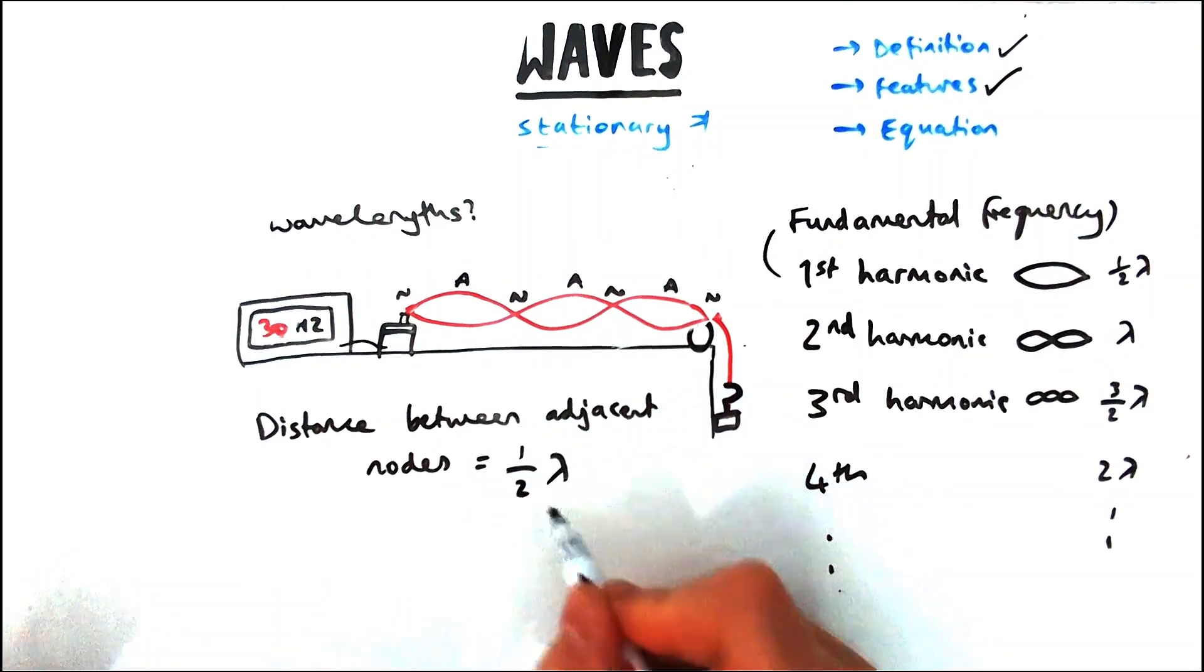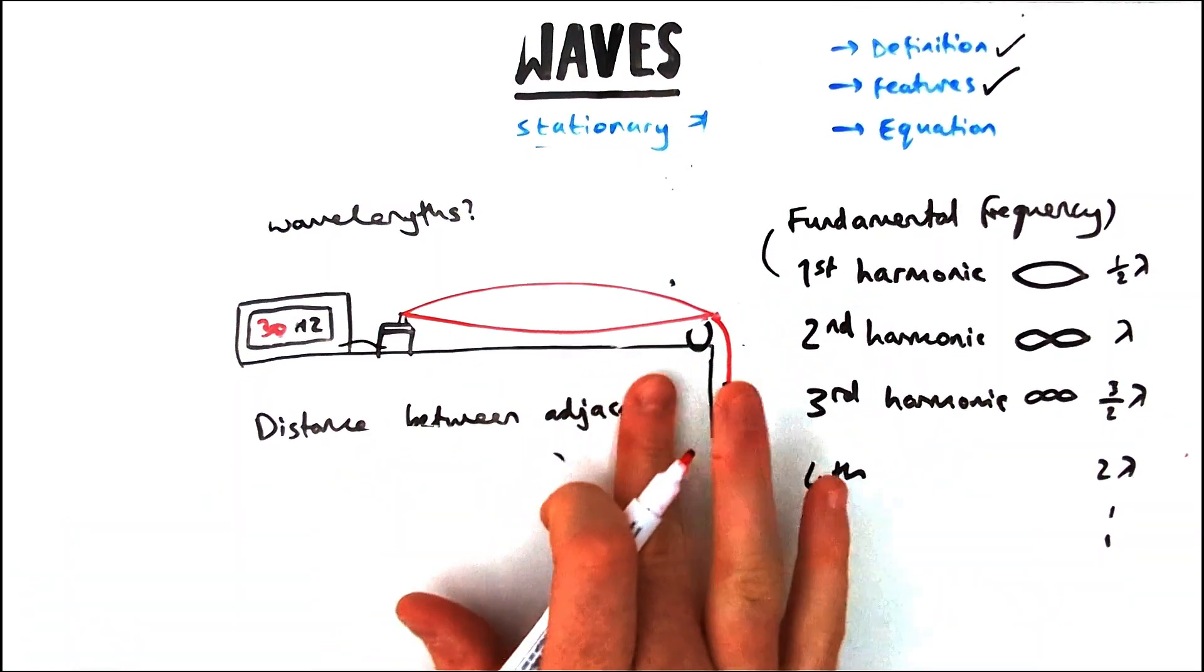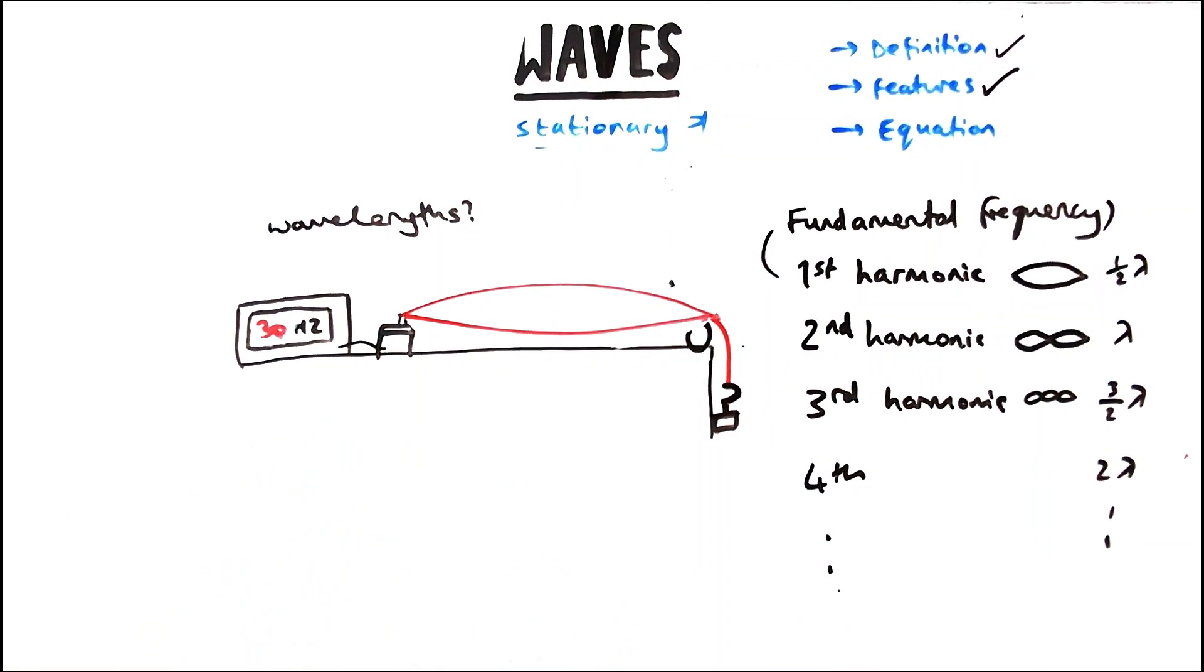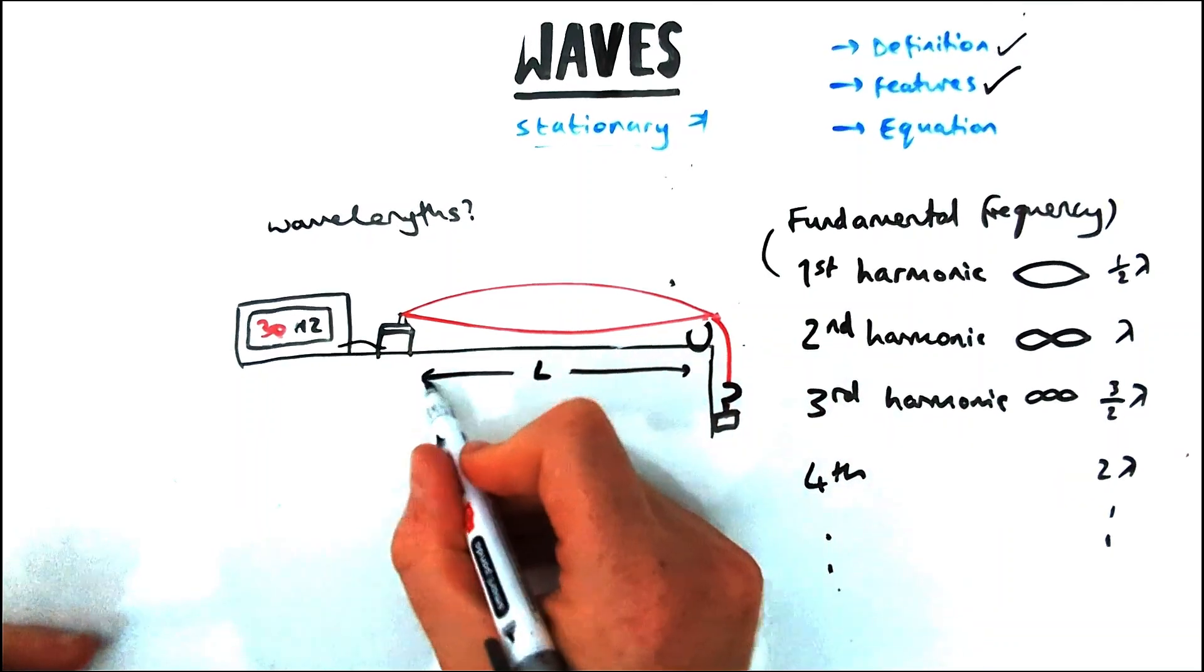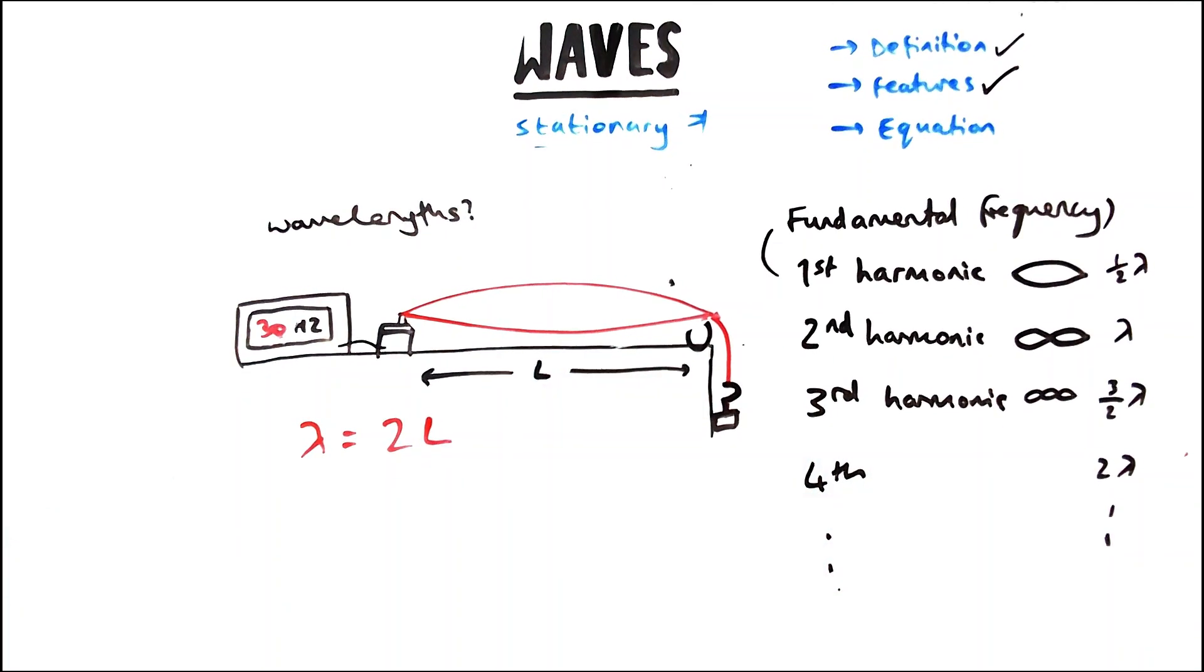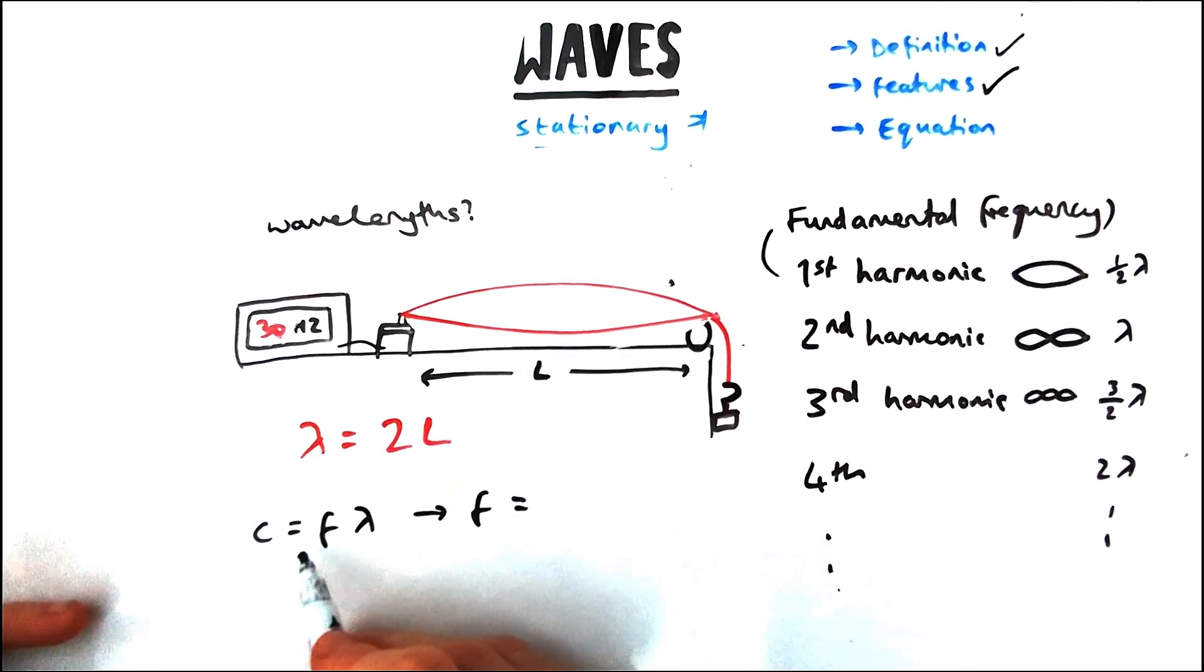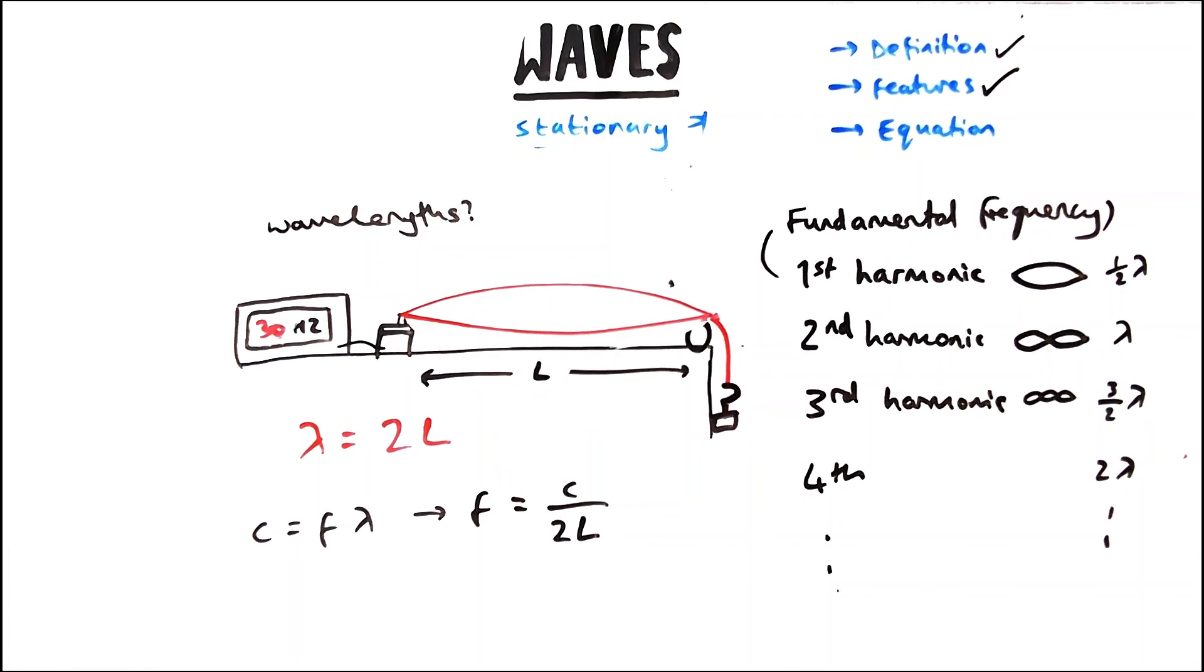Let's say we've got the length of this string measured. Generally speaking, we can use our wave speed equation to adjust it slightly for stationary waves. So speed equals frequency times wavelength. Here, instead of wavelength, for the fundamental frequency that is going to equal two times the length because I'd have to double it to find a full wavelength.